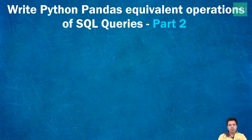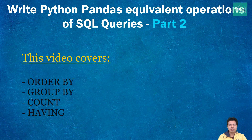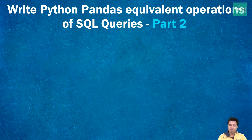In this video, I am going to cover ORDER BY to sort the column values in both ascending and descending order, GROUP BY to group similar values together, COUNT to count the number of occurrences, and the HAVING clause to put an additional filter. So stay connected till the end of this video and series to acquire the complete knowledge.